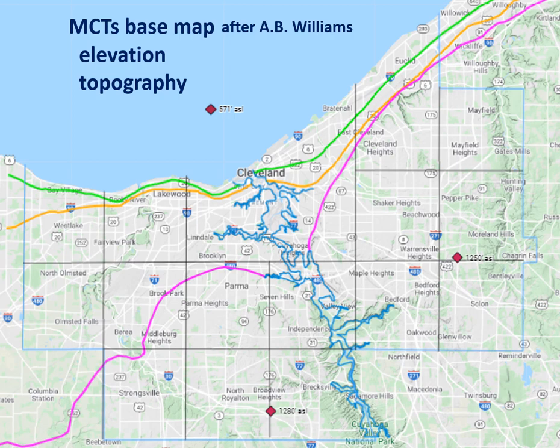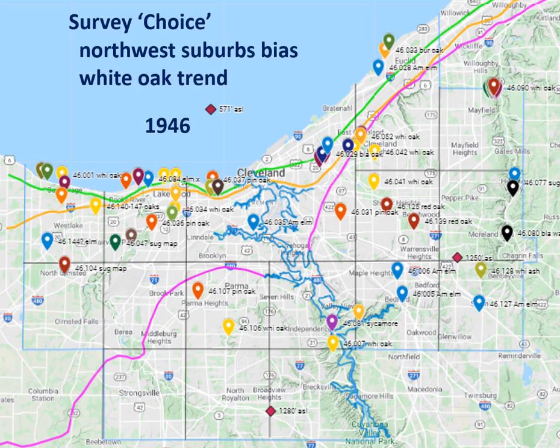There are two patterns I'd like you to see: a Northwest Suburbs bias and a white oak trend. For the duration of the Moses Cleveland Trees program, the Northwest Suburbs garnered most designations — Lakewood, Rocky River, Bay Village, Westlake. The 1946 layer shows many trees aligned along Lake, Detroit, and Lorain roads. On the east side, only Chagrin River Road shows a similar focus. Strange that the leafy suburbs of the east side heights were poorly represented.